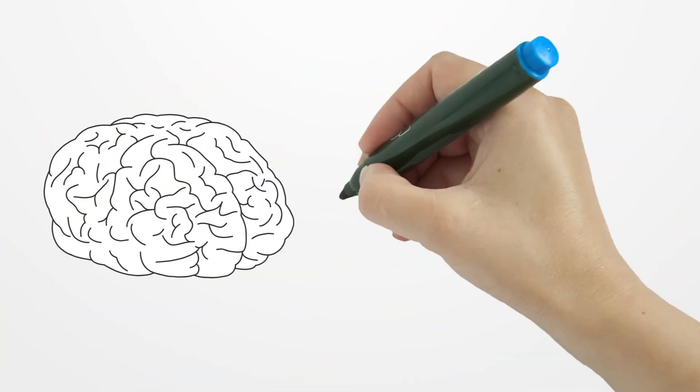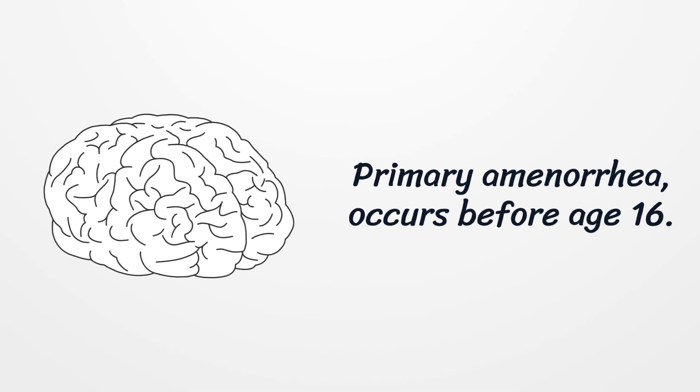With primary amenorrhea, menstruation fails to begin before age 16.